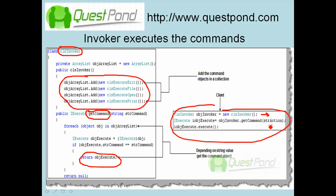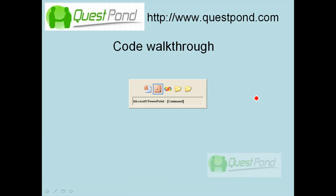The client code is now very simple — just three lines: create an object of the invoker class, get the object based on the action, and execute it. There are no if-conditions at all. You create an invoker object, pass in the command action, and execute it.